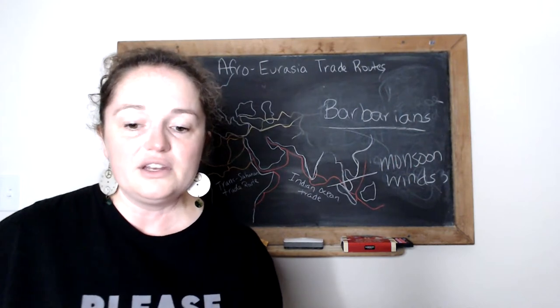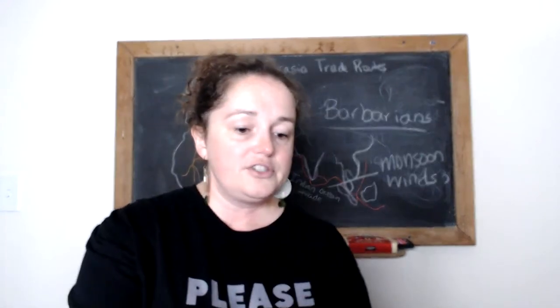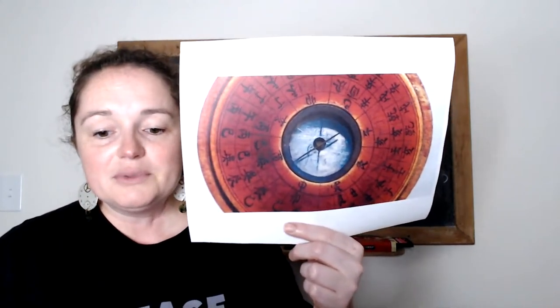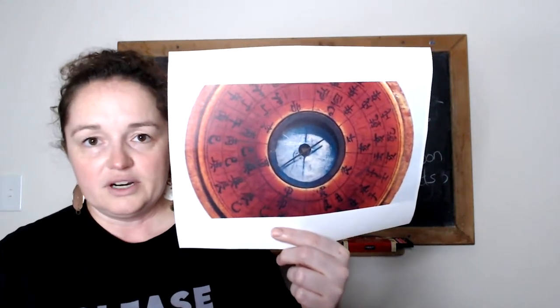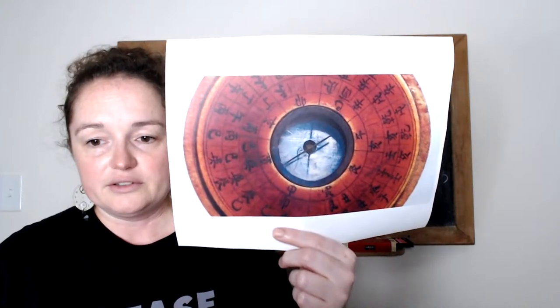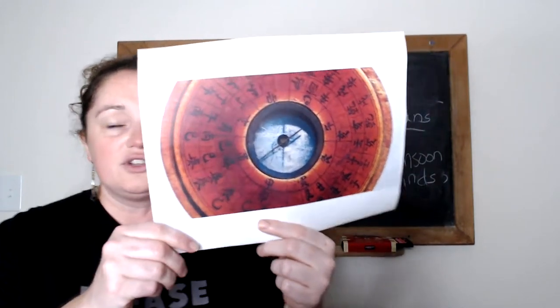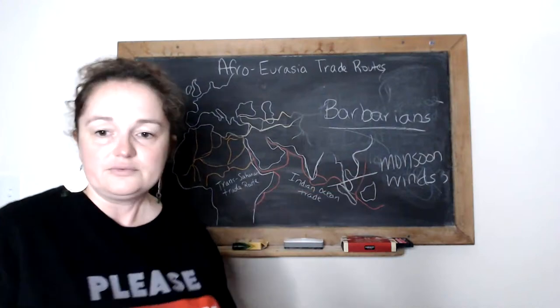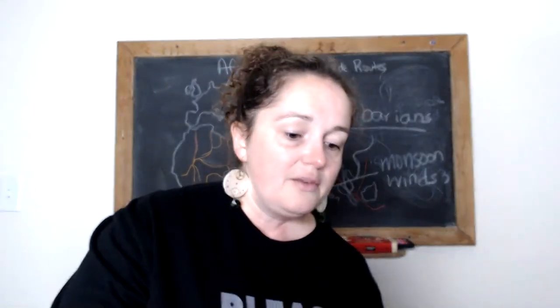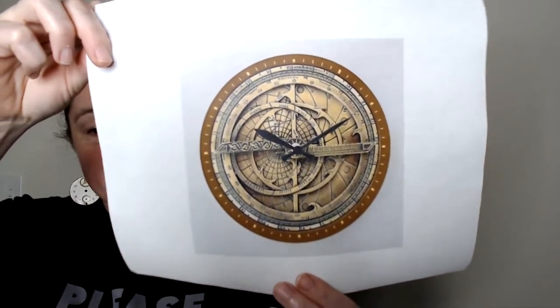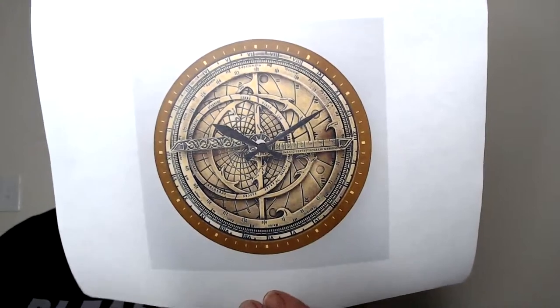For innovations: first, the magnetic compass helps sailors navigate without having the sun visible — so on a cloudy day you can still figure out where you're going. Second, the astrolabe — definitely remember this one because the AP test loves to ask about it. The astrolabe enables sailors to calculate latitude.